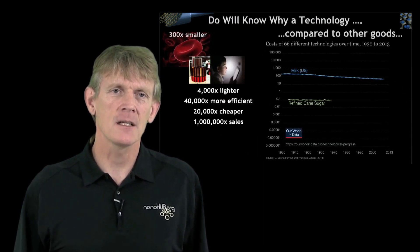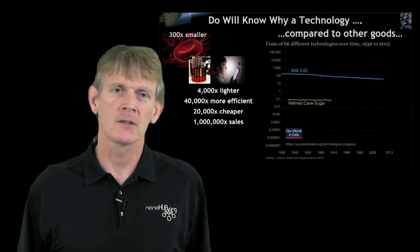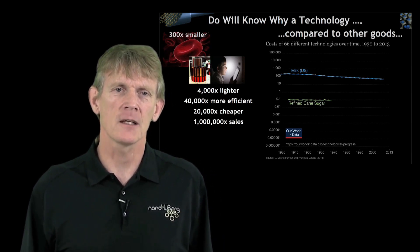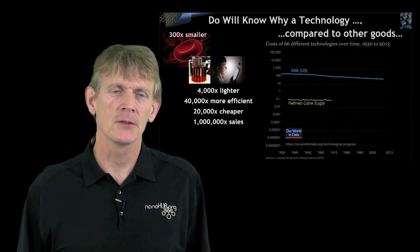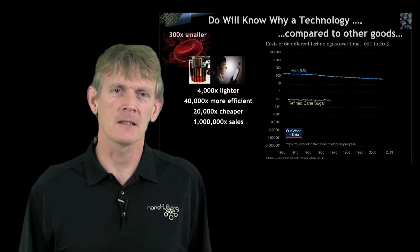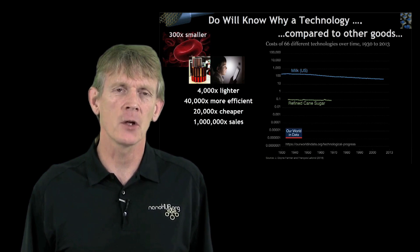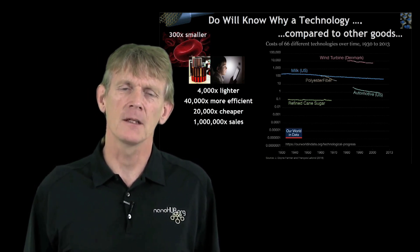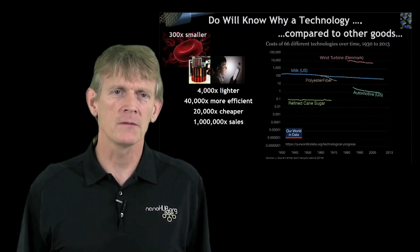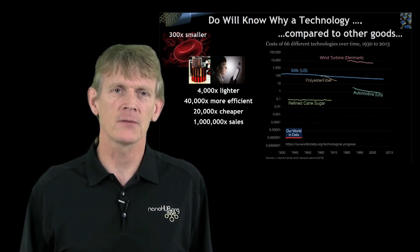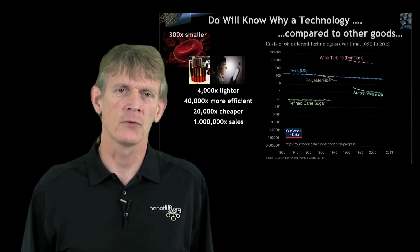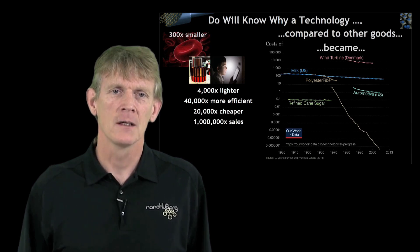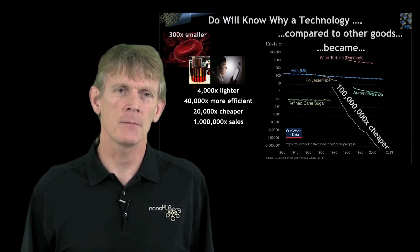So this technology is just amazing. And comparing it to other goods dating back to 1930, where here I'm charting commodities like milk or sugar, you see those prices barely changed at all — and these are inflation adjusted. Now if you look at technology products like the polyester fiber, the wind turbine, or automotive industry, you see in typical technologies a factor of 10 price or performance improvements. But this technology you learn about in this course became 100 million times cheaper.